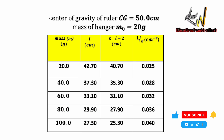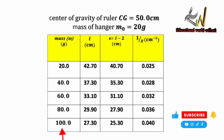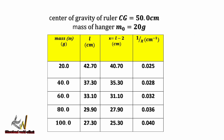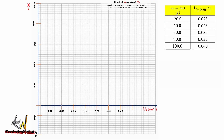When m = 60g, L = 33.1 cm, x = 31.1 cm, and the inverse of x is 0.032 per cm. When m = 80g, L = 29.9 cm, x = 27.9 cm, and the inverse of x is 0.036 per cm. When m = 100g, L = 27.3 cm, x = 25.3 cm, and the inverse of x is 0.04 per cm. Note that WAEC may tweak the question, so this is just a prediction.